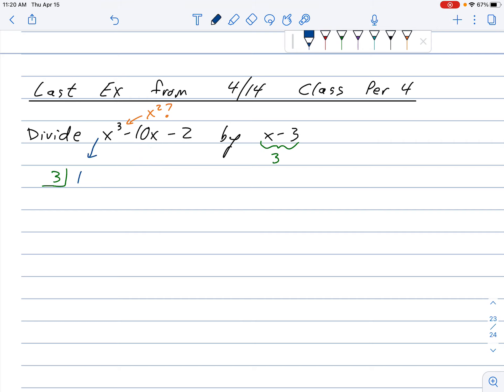So we do the same thing. My coefficient is 1. My coefficient is 10. My coefficient is negative 2. And then where there is supposed to be an x squared, we kind of have to save the spot and make it a 0.